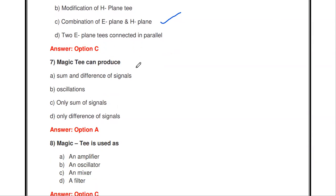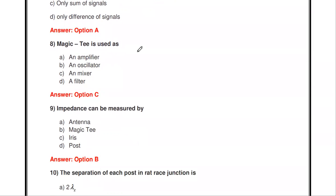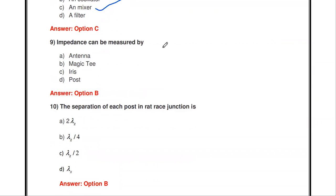The next question: the magic T can produce — sum and difference of signal, oscillation only, sum only, or difference only? The magic T can produce both the sum and the difference of signals. The magic T is used as a mixer; when designing a microwave mixer, we may use the magic T, and it can also be used for duplexing operations.